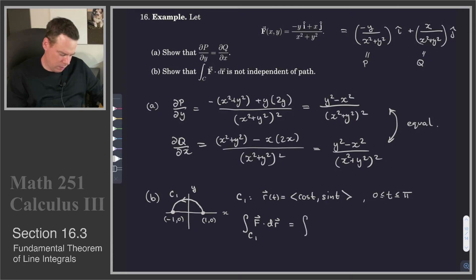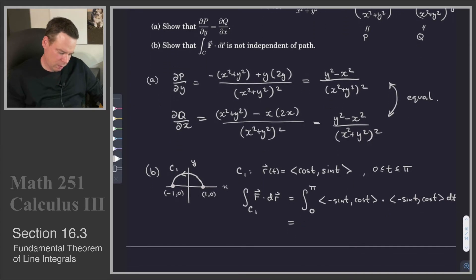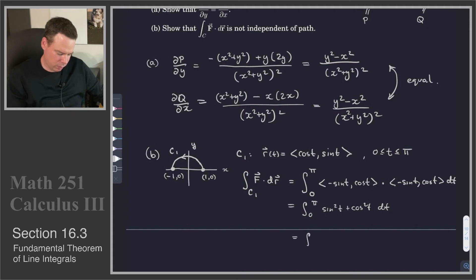Since we're on a circle of radius 1, x²+y² becomes 1, so the vector field F becomes (-y, x) = (-sin t, cos t). Then dotted with r'(t) = (-sin t, cos t), this gives the integral from 0 to π of sin²t + cos²t dt — just the integral of 1 from 0 to π — which has a value of π.